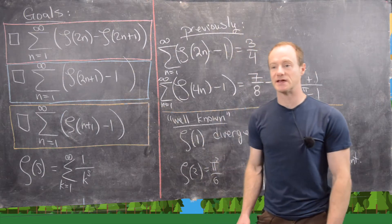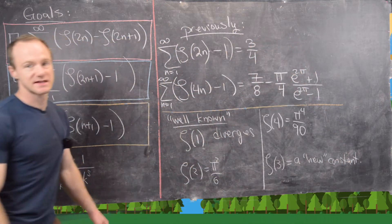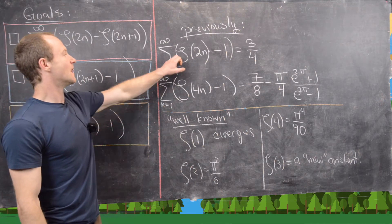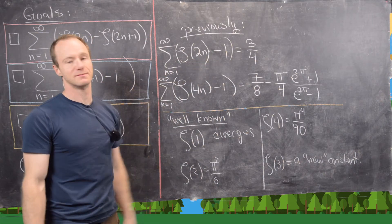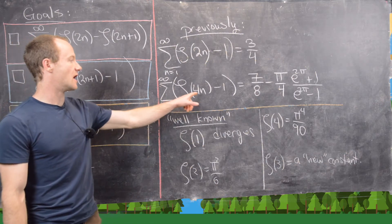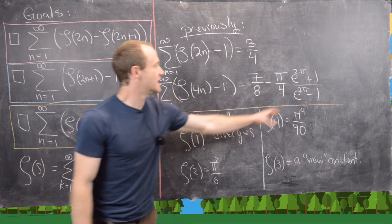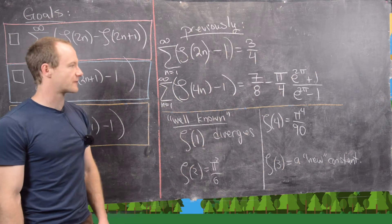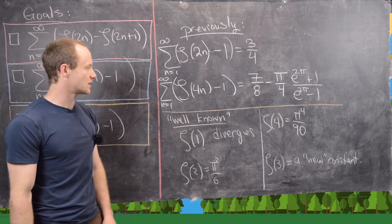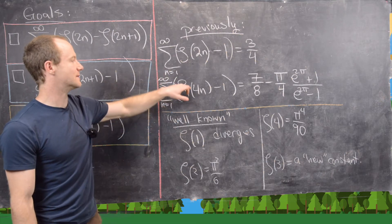The only place it cannot be continued is the vertical line where the real part equals 1. Previously, in other videos, we derived the following identities: the sum of all even values of the zeta function minus 1 equals 3/4. The sum of zeta values at multiples of 4 minus 1 equals 7/8 minus pi over 4 times e to the 2pi plus 1, over e to the 2pi minus 1. A similar identity for 4n plus 2 can be obtained by combining these two.